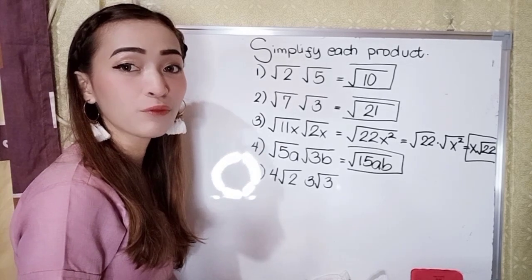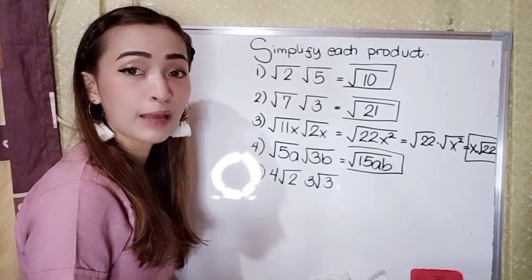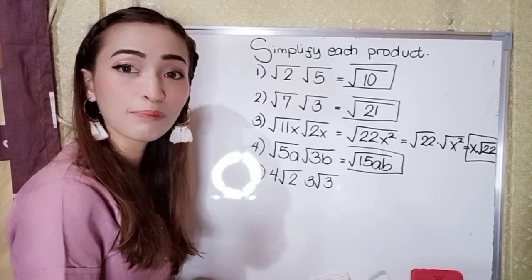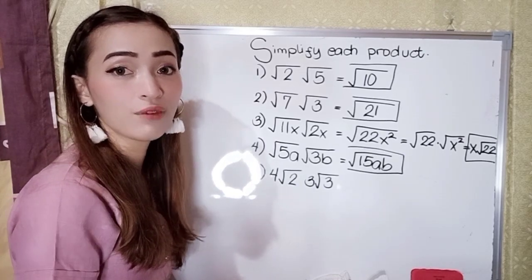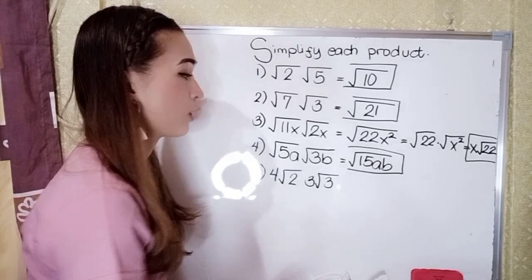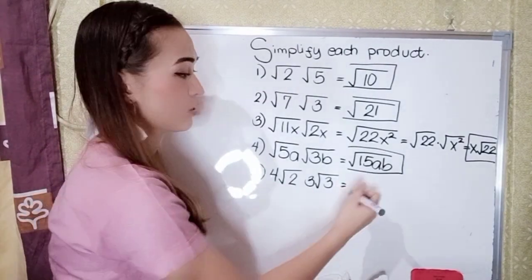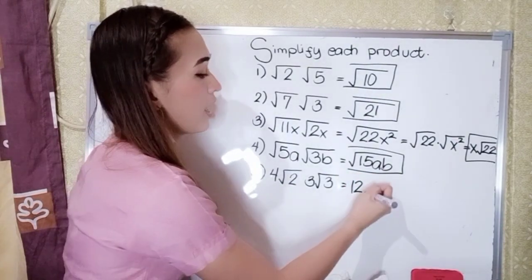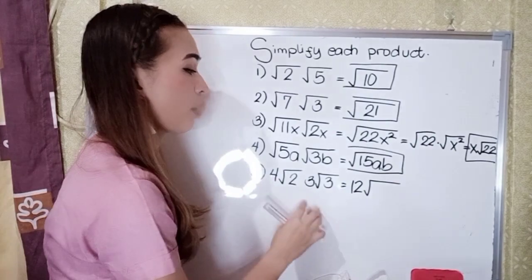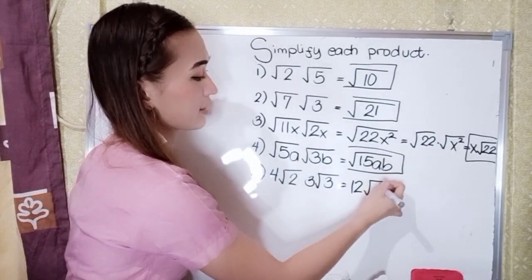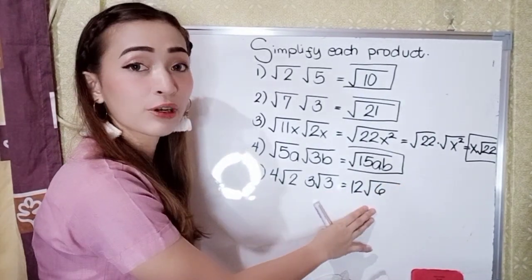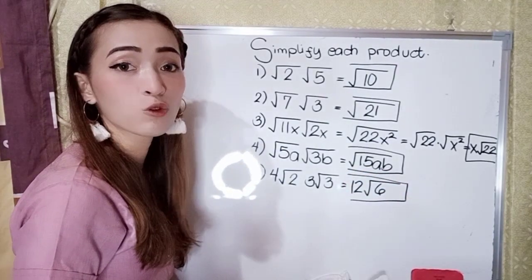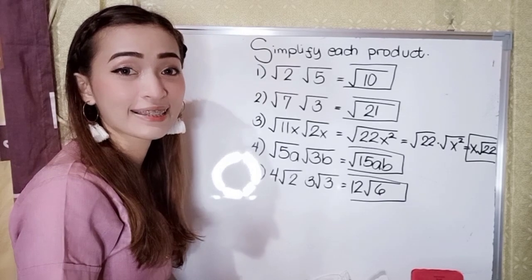For number five, we have four square root of two times three square root of three. Multiply the numerical coefficients and the radicands separately. Four times three is twelve, and the square root of two times three is square root of six. Since six is not a perfect square, our final answer in number five is twelve square root of six.